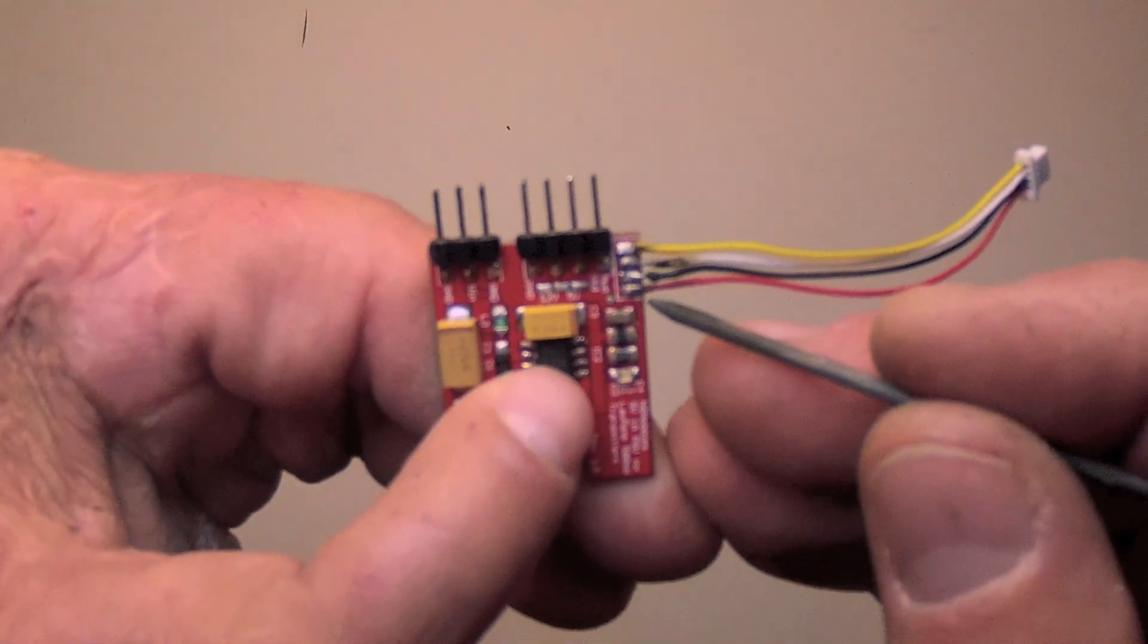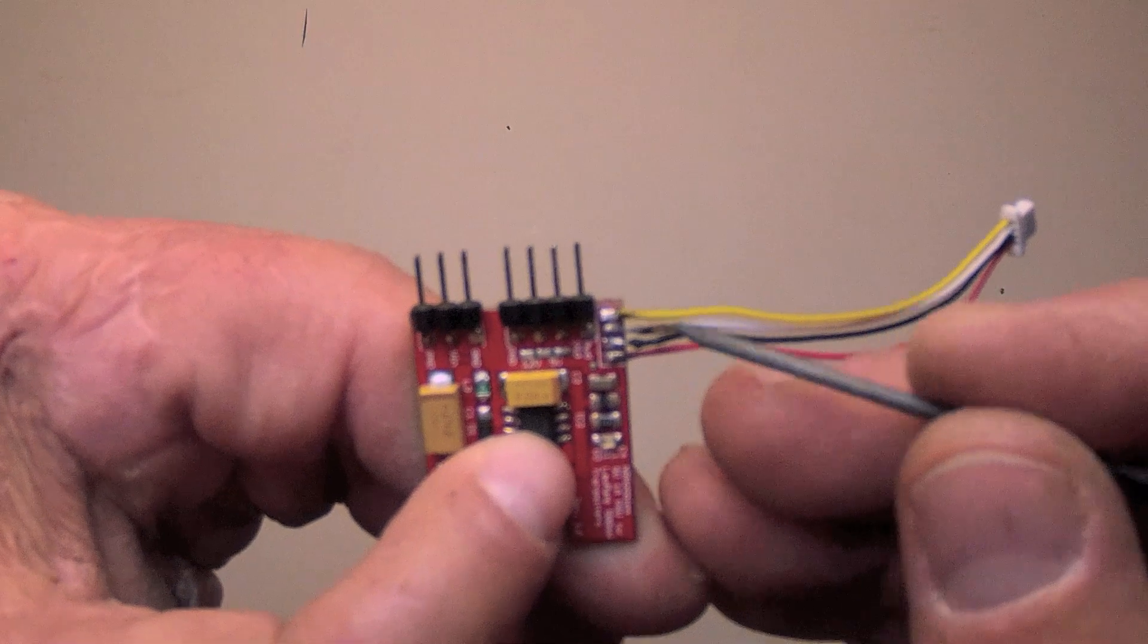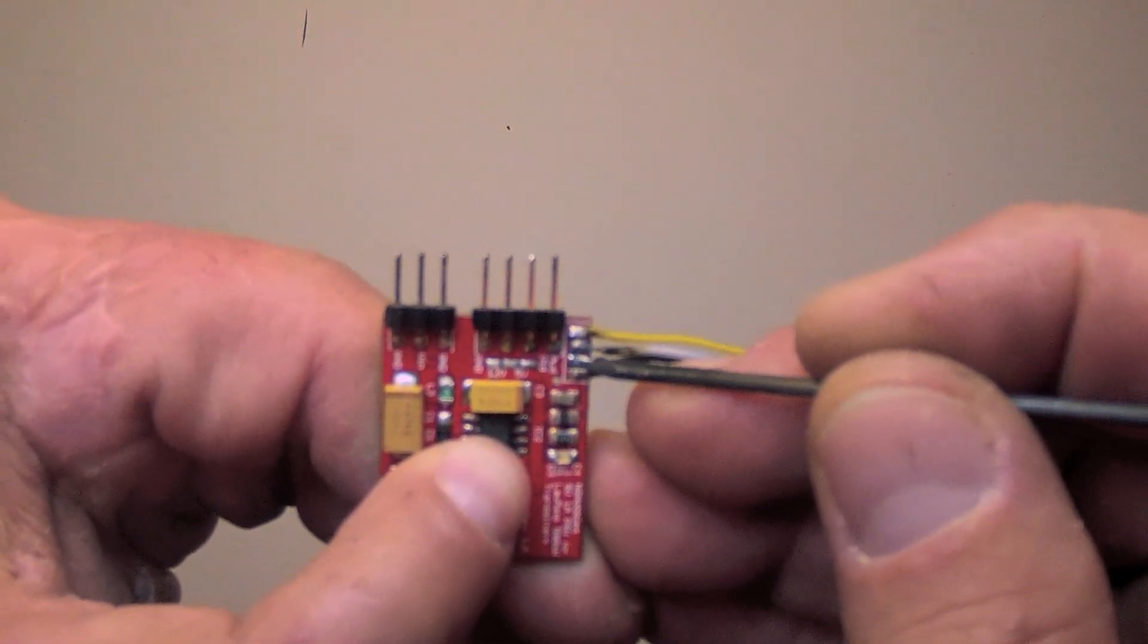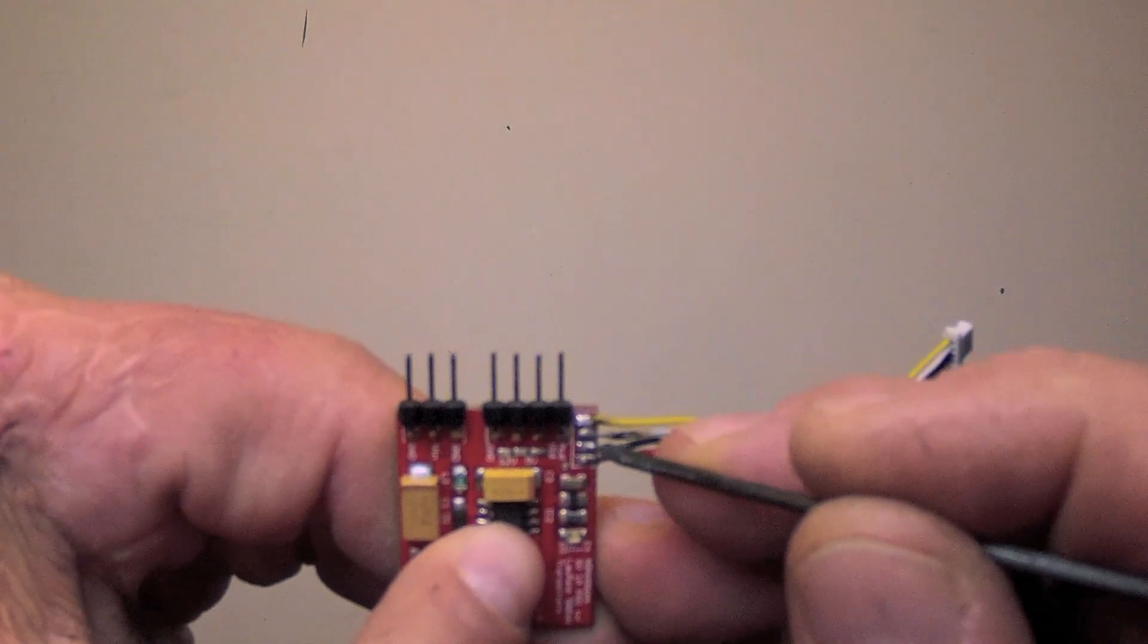With delicate use of the soldering iron, you'll get all four contacts soldered on. Be sure you can see a little bit of red printed circuit board between each of your solder joints to ensure that there's no shorting between each of these.